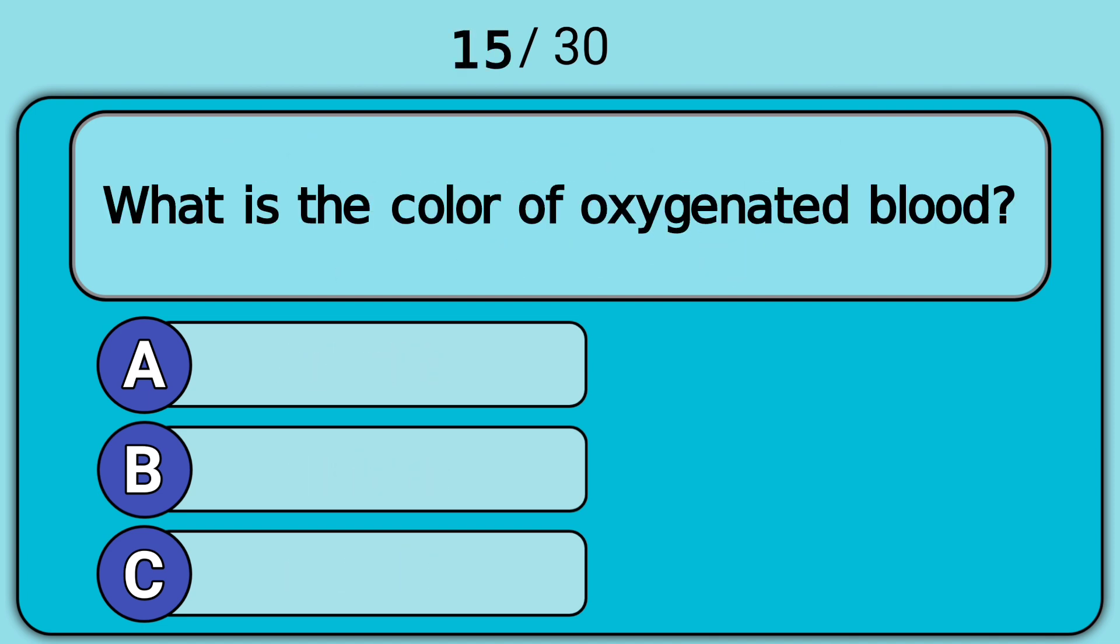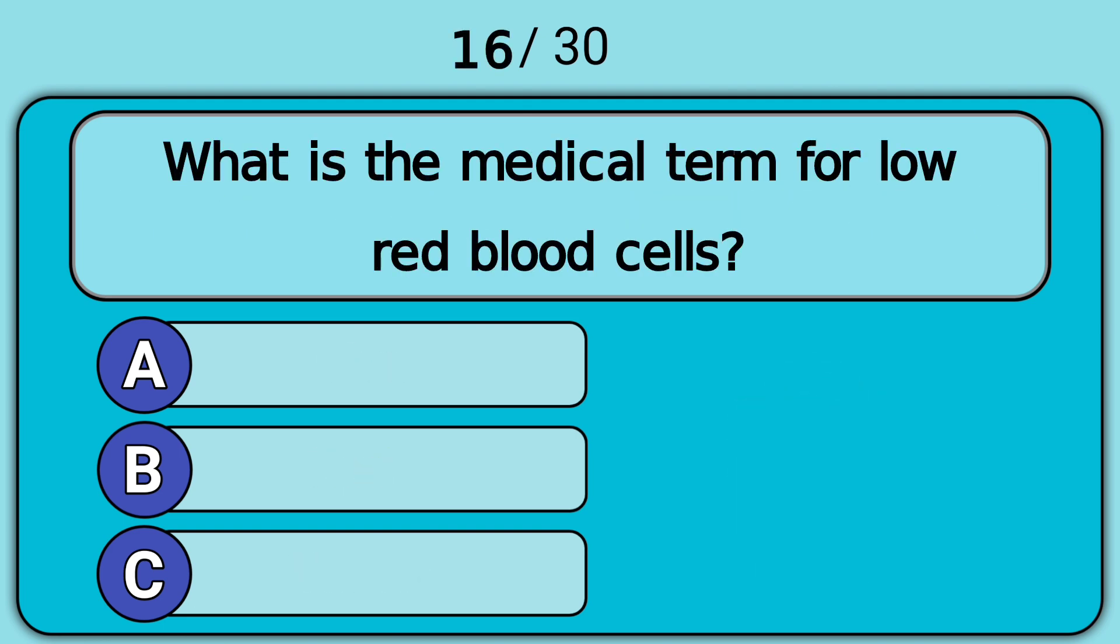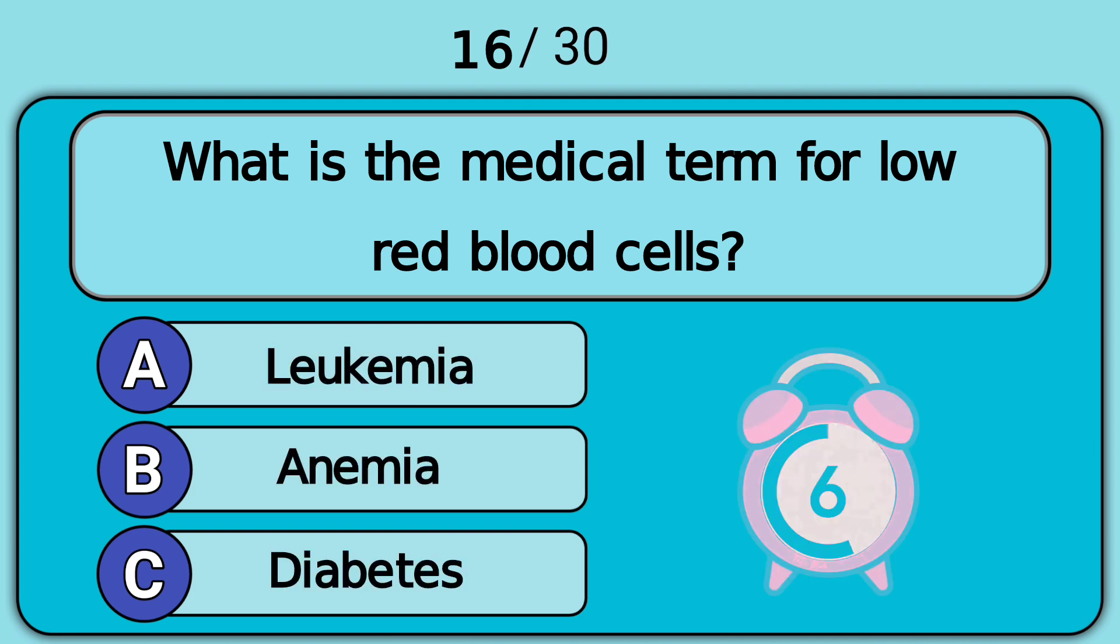What is the color of oxygenated blood? Answer B. Red. What is the medical term for low red blood cells? Answer B. Anemia.